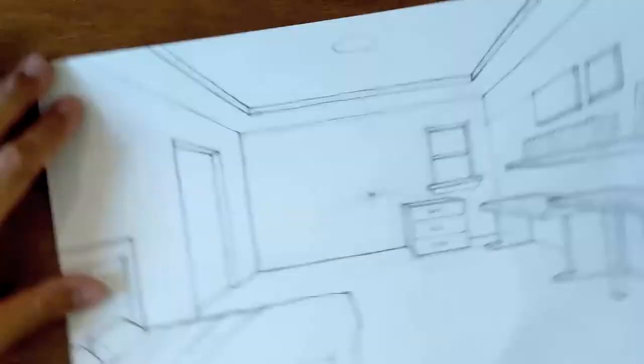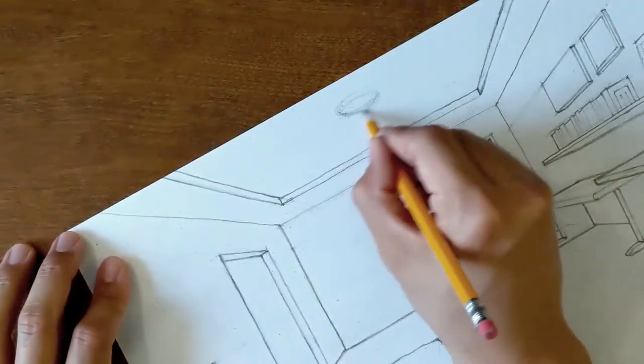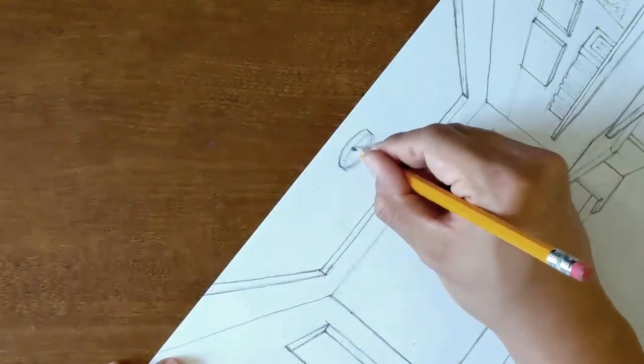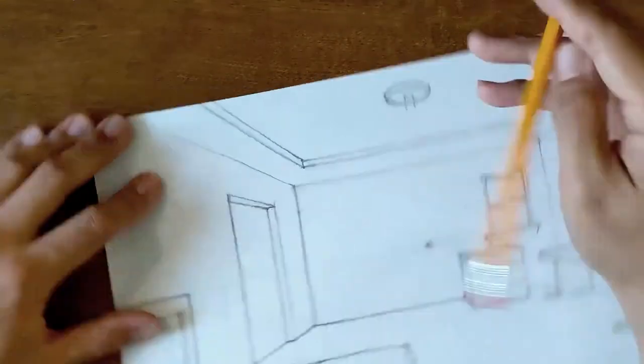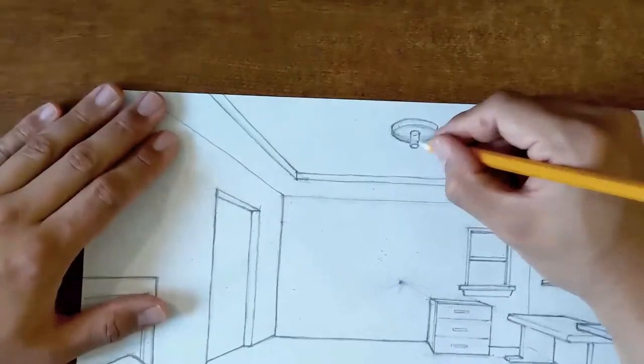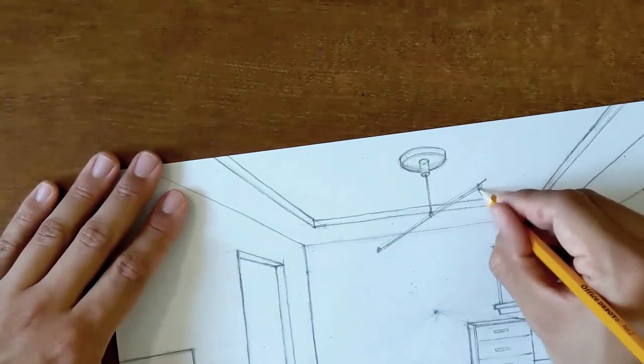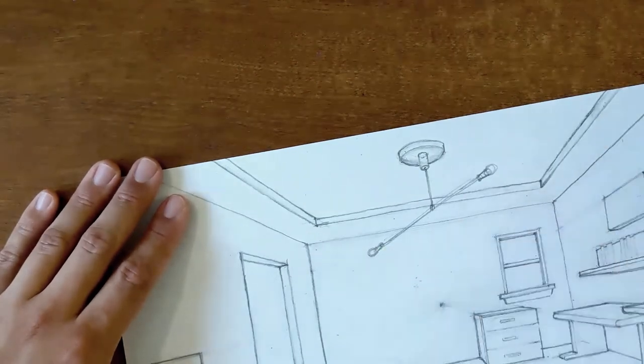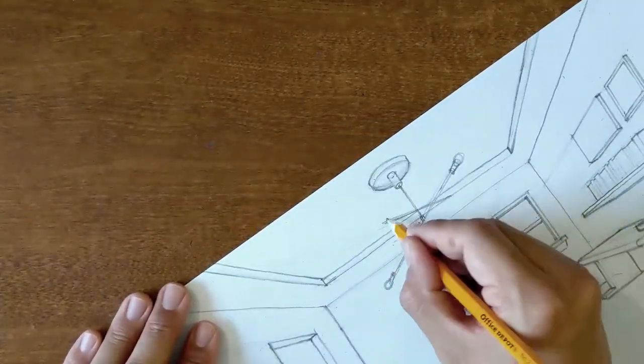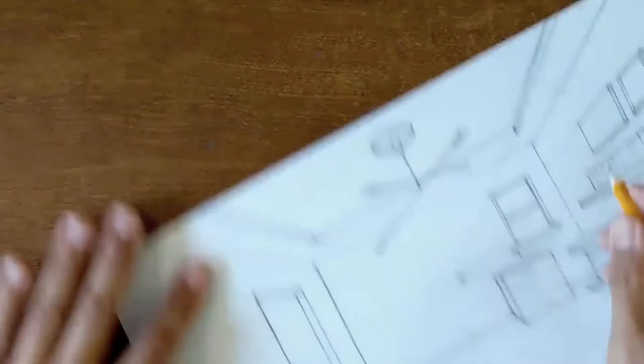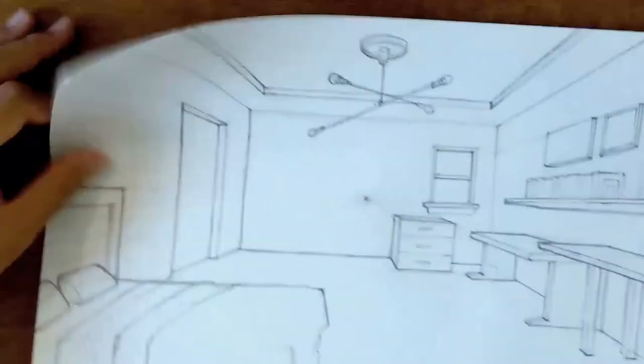And the final element. And I'm not going to be drawing any construction lines back to the vanishing point, I'm just eyeballing it in. This is a little light fixture, one of those nice modern looking light fixtures. There you go, there's the finished room.